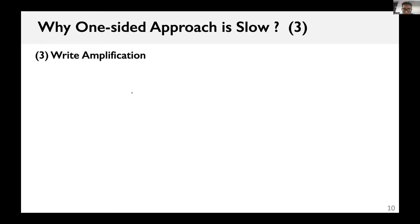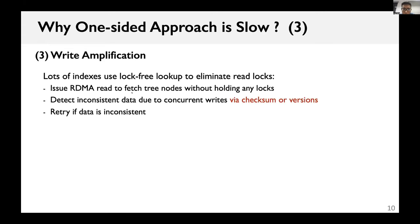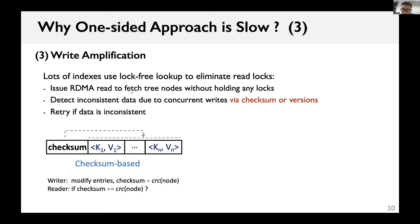Write amplification also makes the one-sided approach slow. Many indexes use log-free lookup to eliminate read locks. They issue RDMA reads to fetch tree nodes without holding any lock and detect inconsistent data due to concurrent writes by checksum or versions. As shown in the picture, in the checksum mechanism, each tree node includes a checksum covering the whole node area.